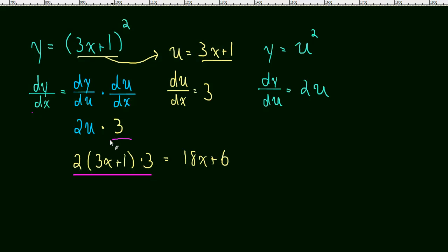We took the derivative of the outside, that was the power rule, the 2 coming down, repeated the inside, 3x plus 1 stayed the same, multiplied by the derivative of the inside. That's just 3.